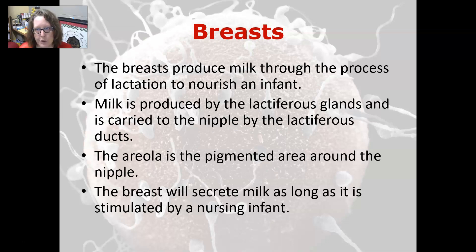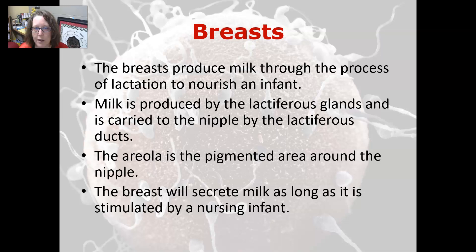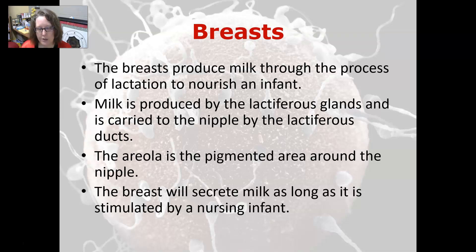The breasts produce milk through the process of lactation to nourish an infant after childbirth. Milk is produced by the lactiferous glands and carried to the nipple by lactiferous ducts. The areola is the pigmented area around the nipple where the baby latches on to nurse. The breast will secrete milk as long as it is stimulated by a nursing infant.